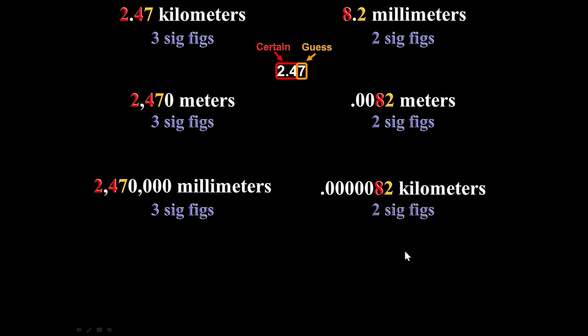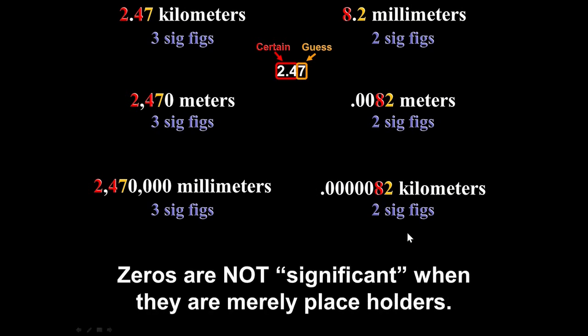Generally speaking, it's easy to count significant figures: if a digit is anything but zero, it is significant. If it is zero, the challenge is that sometimes it's significant and sometimes it is not. Zeros are not significant when they are merely placeholders — they either push the sig figs to the left making a really big number, or push them to the right making a very small number. Zeros are not significant when they are merely placeholders.